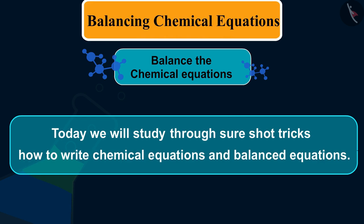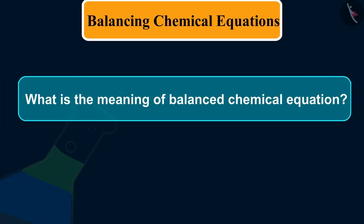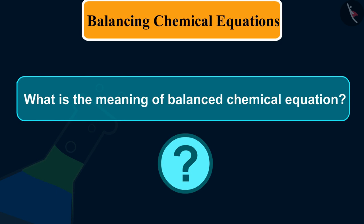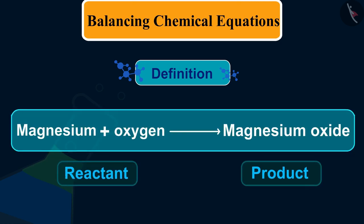Balancing of chemical equations: first we will understand what is the meaning of a balanced chemical equation. A balanced chemical equation is one which has the same number of atoms of elements on both sides of the equation.